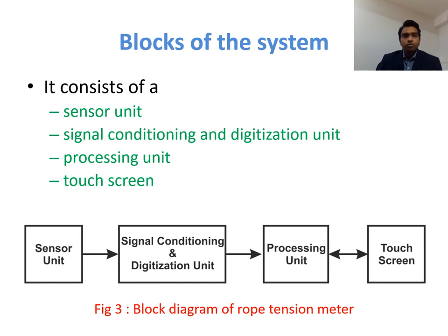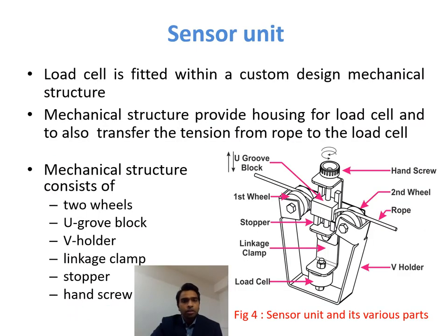The figure shows the building blocks of the system, which includes a sensor unit, signal conditioning and digitization unit, processing unit, and a touchscreen. Except the sensor unit, all other units are designed using readily available off-the-shelf components. The sensor unit has two important parts: one is the load cell, which is readily available in the market, and the mechanical structure, which is designed in our workshop. The main purpose of the mechanical structure is to provide housing for the load cell and to transfer the tension from the rope to the load cell.